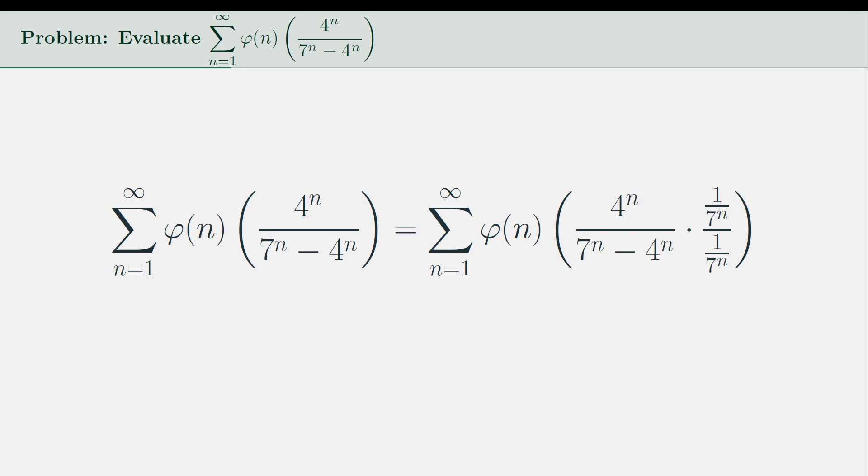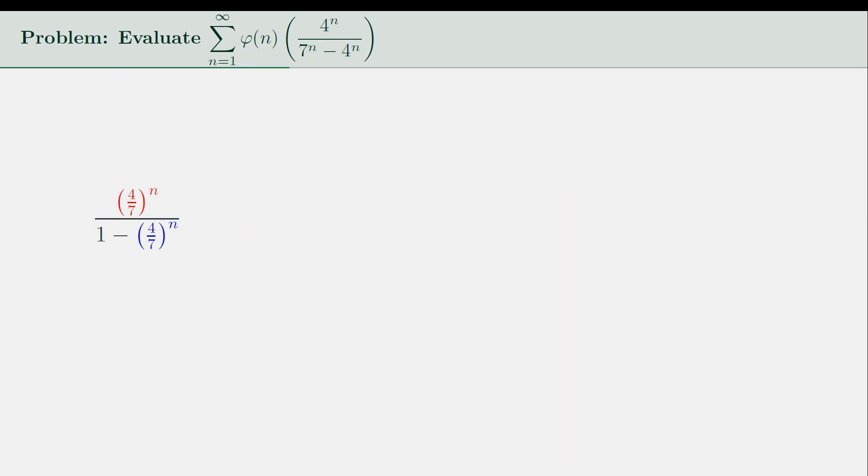By simple algebra, we can multiply the numerator and denominator by 1/7^n to make one of the terms in the denominator equal to 1. Taking a closer look at this denominator gives us the impression that it looks similar to the fraction a/(1-r), which you might probably know as the sum of the infinite geometric series with first term a and common ratio r.